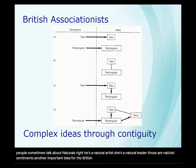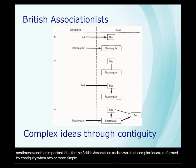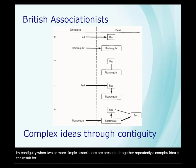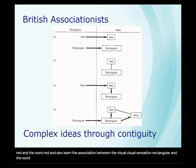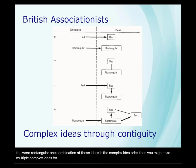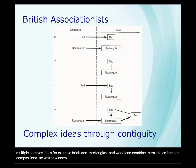Another important idea for the British associationists was that complex ideas are formed by contiguity. When two or more simple associations are presented together repeatedly, a complex idea is the result. For example, Mill suggested that you might learn the association between the visual sensation 'red' and the word 'red,' and also learn the association between the visual sensation 'rectangular' and the word 'rectangular.' One combination of those ideas is the complex idea 'brick.' Then you might take multiple complex ideas — for example, brick and mortar, glass and wood — and combine them into an even more complex idea, like 'wall' or 'window,' and then those ideas might combine into a more complex idea, like 'house,' and so forth.